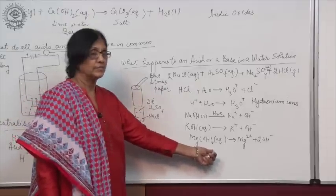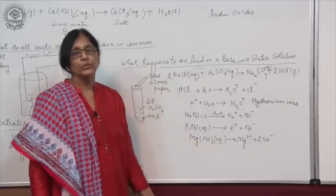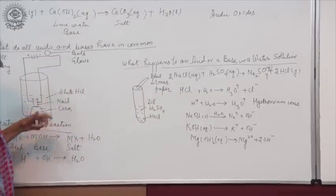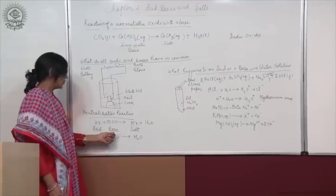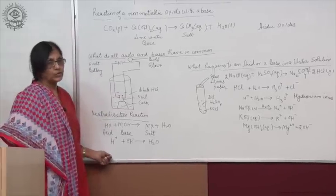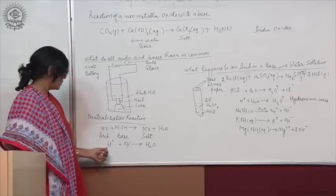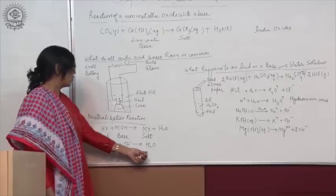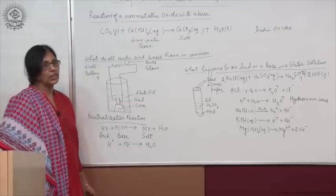When acid and base react, salt and water are formed. For a general acid HX and base MOH: HX + MOH → MX + H2O. Acids give hydrogen ions and bases give hydroxide ions. Neutralization is actually a reaction between hydrogen ions and hydroxide ions: H+ + OH− → H2O.